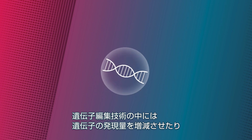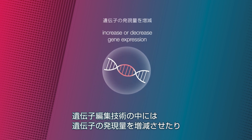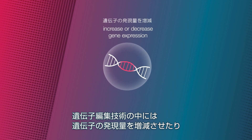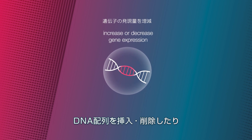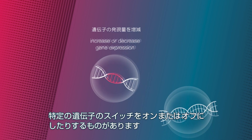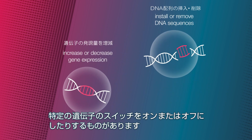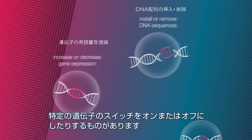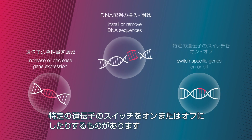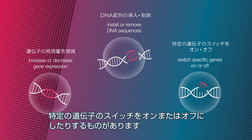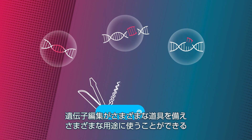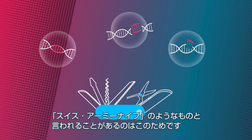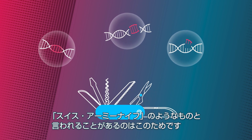Some gene editing technologies are able to increase or decrease gene expression — the process of translating the information encoded in the DNA into the molecules the cell needs. Other technologies install or remove DNA sequences, or switch specific genes on or off. That's why gene editing could be compared to a Swiss army knife, with multiple tools that can perform different tasks.